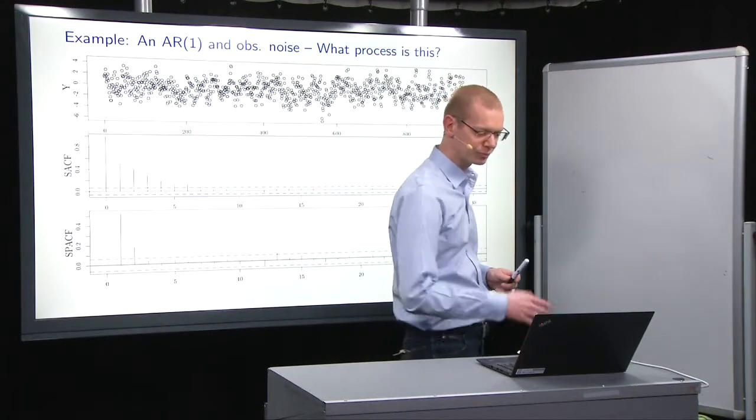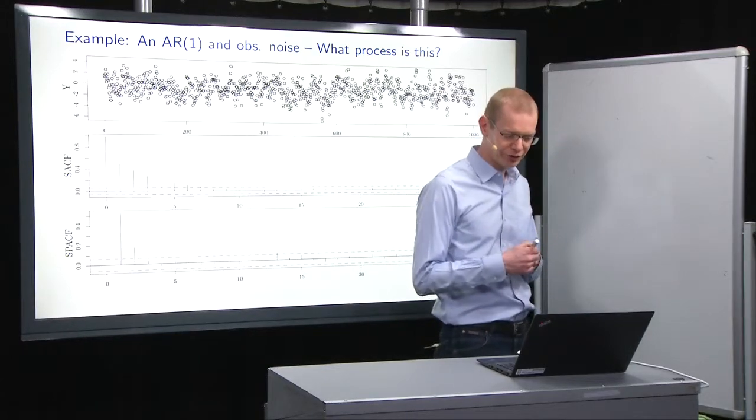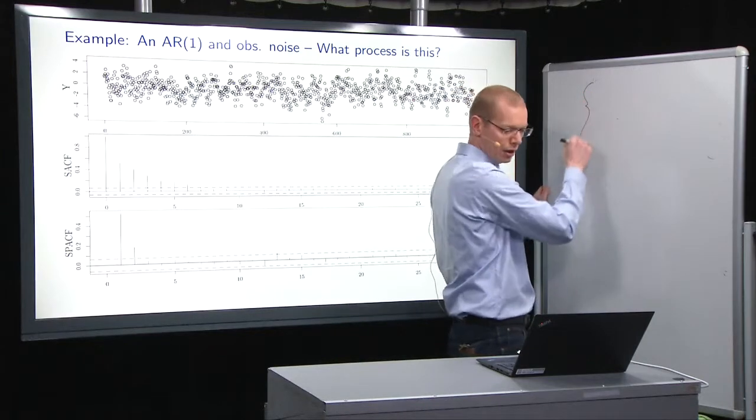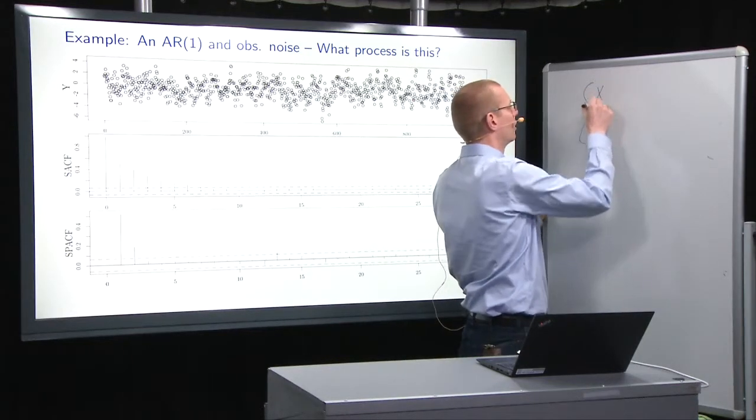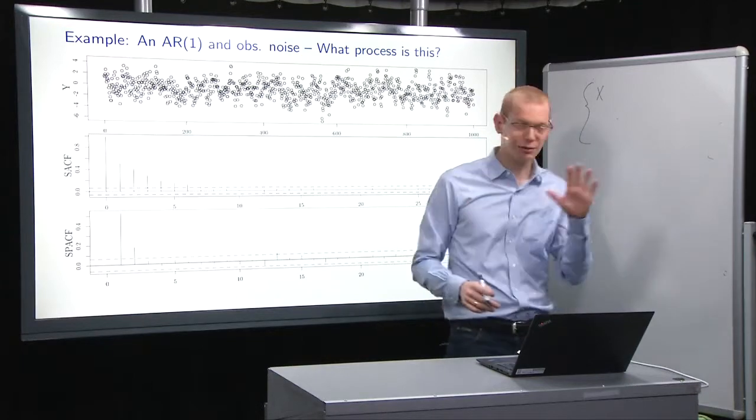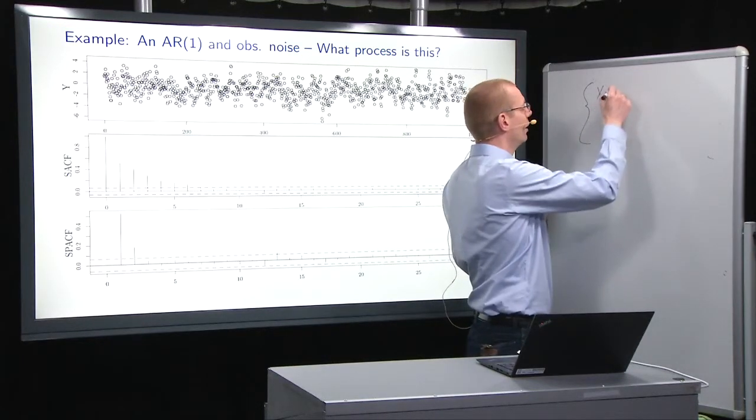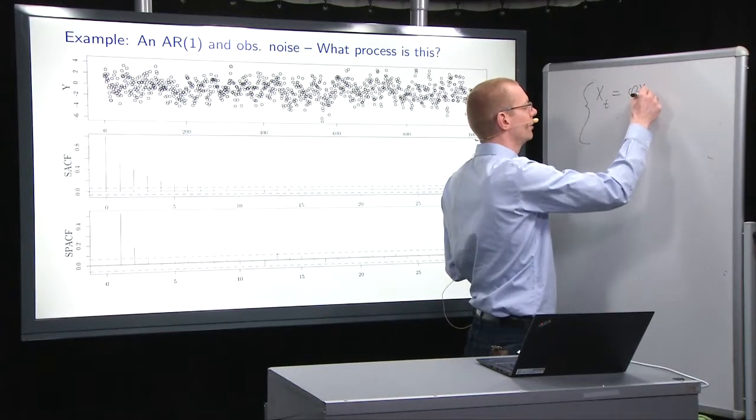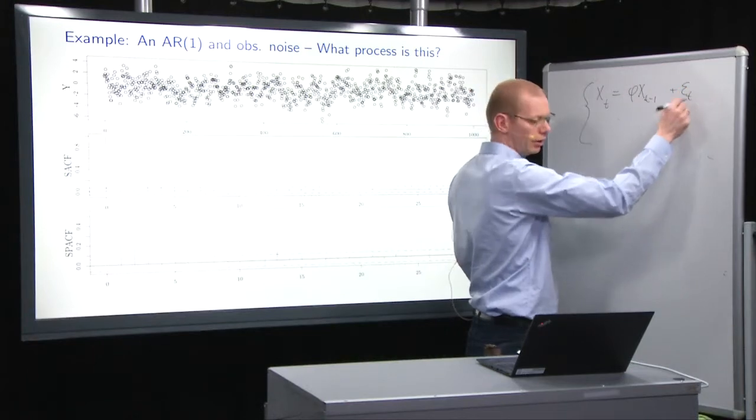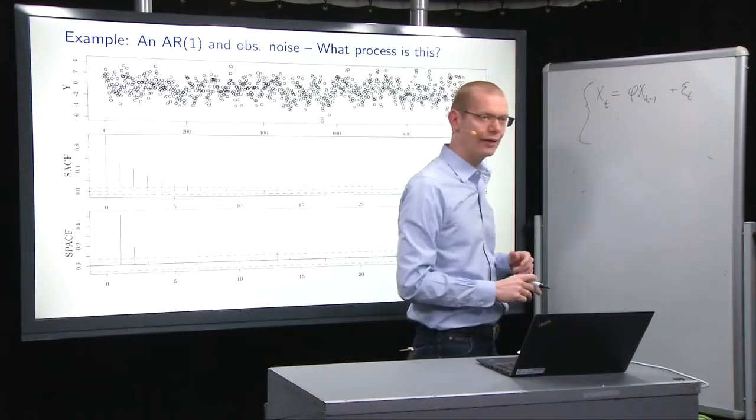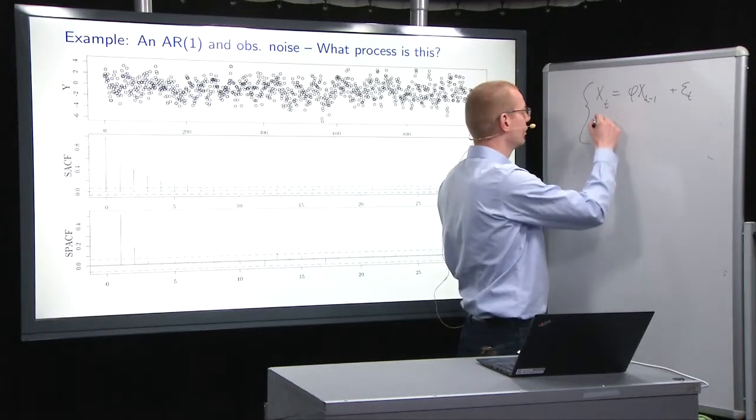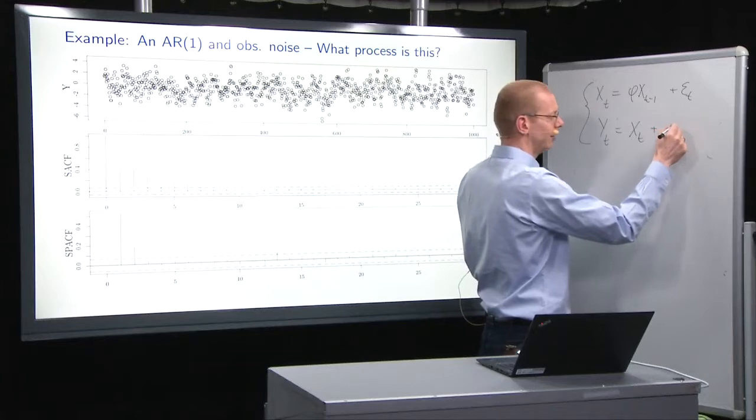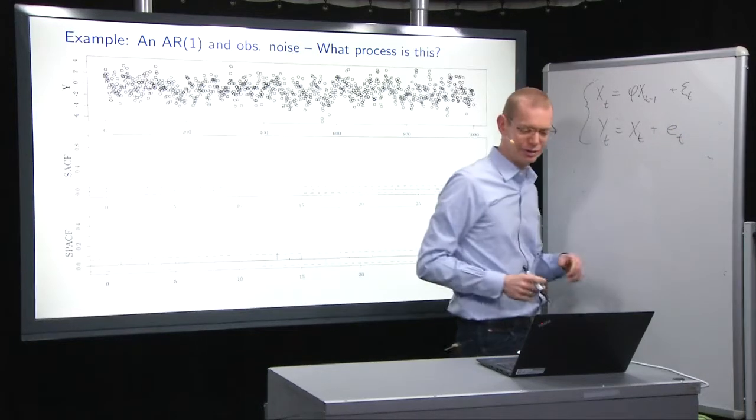Basically, what we have is that we have a system. Let's just write it up for consistency. So we have, rather than using temperatures, I will just write xt equals some parameter, phi xt minus 1 plus epsilon t. And then what we have as well is the observation noise. So what we observe is yt equals to xt plus, and I'll just use et as the observation noise down here.